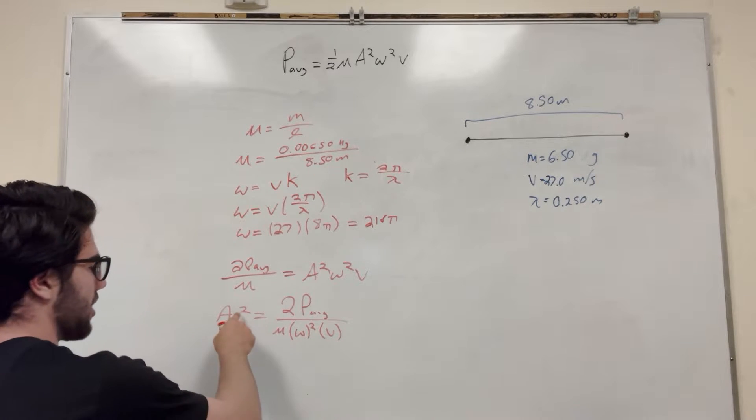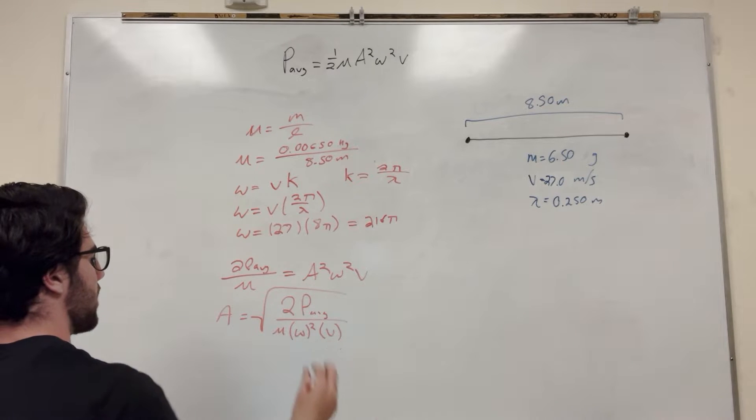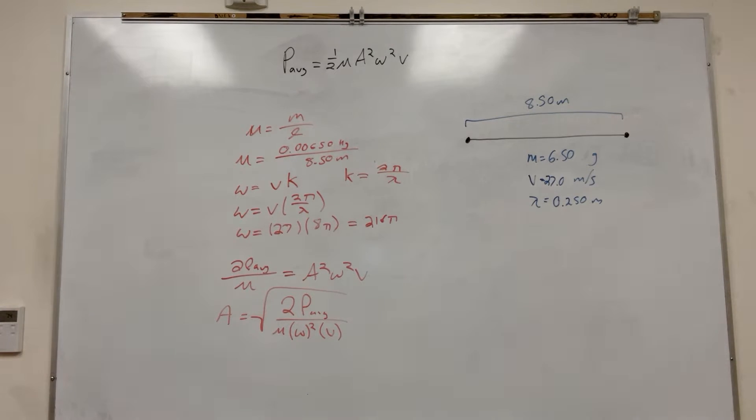Then I'm going to divide by these two things to get A squared by itself. So it's going to be 2 times the power divided by mass per unit length divided by W squared divided by velocity. And then I have this A squared, so I'm going to take the square root of all of this to get what A is by itself as our amplitude.